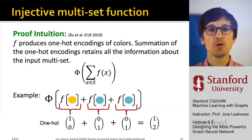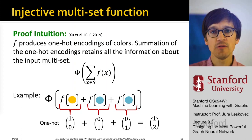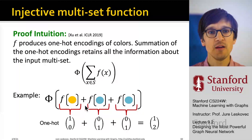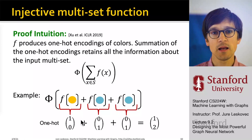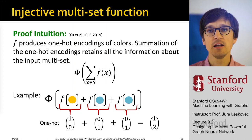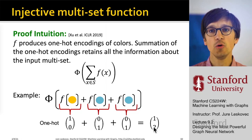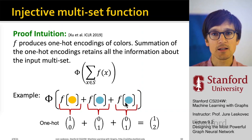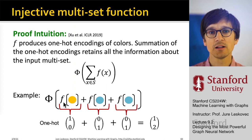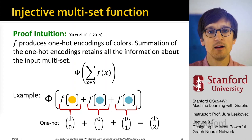The intuition for the proof: f takes colors and produces their one-hot encodings. By summing these up, you count how many elements of each color there are — for example, one yellow node and two blue nodes — preserving all information. However, f must be a very specific function to achieve this; if f doesn't do this properly, the approach won't work.